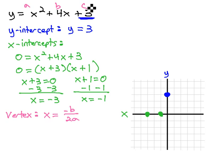a, b, and c. We see that b is equal to 4, so the opposite of 4 over 2a, which we see is 1. And so the x-coordinate is negative 4 over 2, which is negative 2.